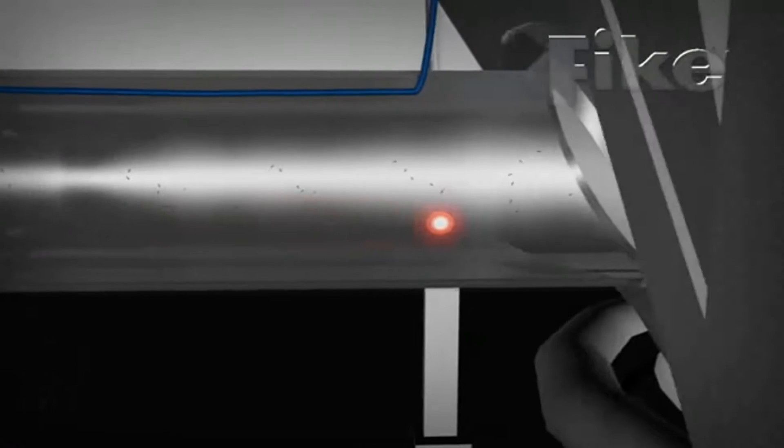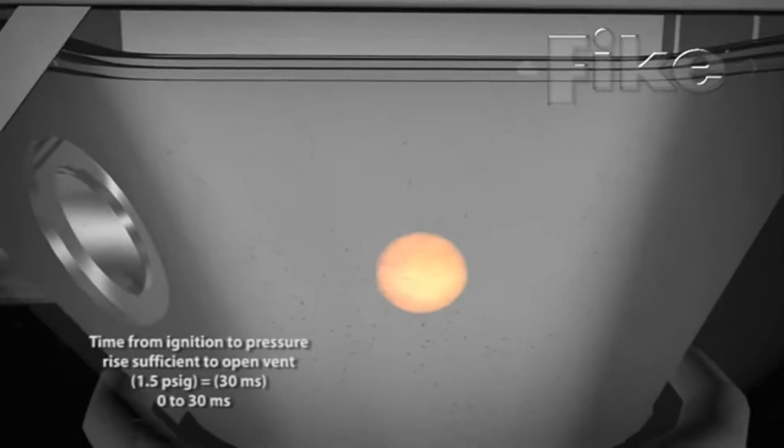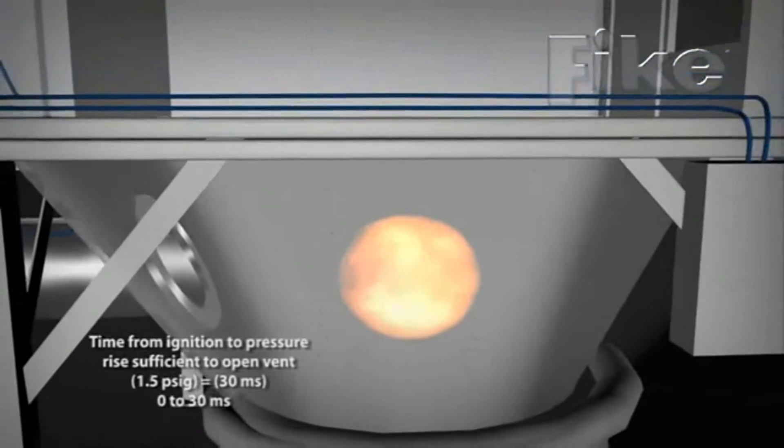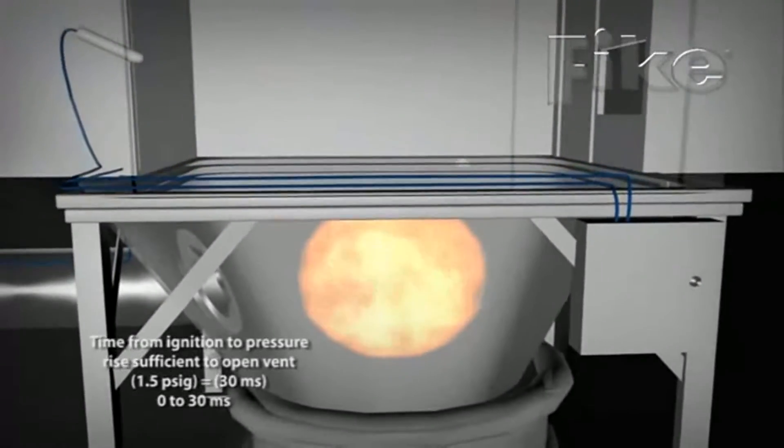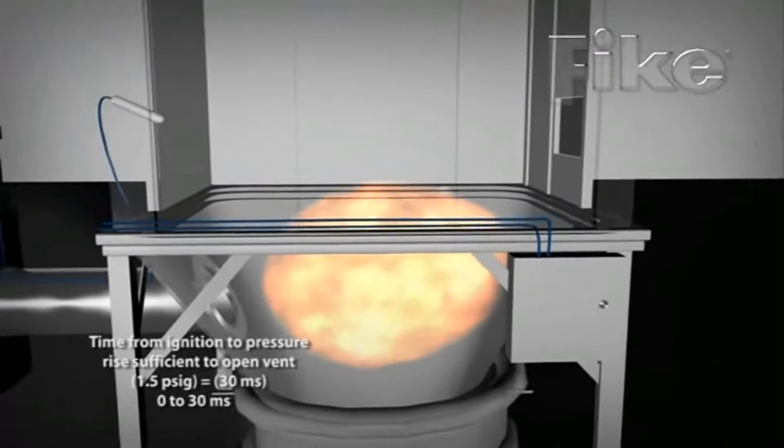When a spark or other ignition source ignites particulate in a vessel, a fireball develops as material burns and grows at an exponential pace. The pressure front expands as the fireball grows, reaching the explosion vent.